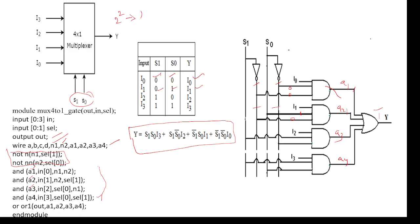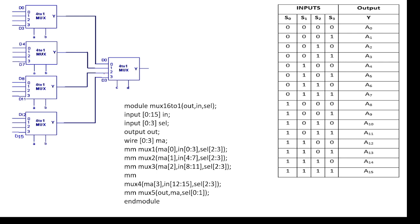That covers the 4 to 1 MUX. Similarly, we write the 16 to 1 MUX by using four instances of the 4 to 1 MUX. There are 4 selection lines numbered 0 to 3. When the selection lines are all 0 0 0 0, we select D0. When the selection lines are 0 0 0 1, we select D1. Based on the selection lines, we get the required output using the 4 to 1 MUX.